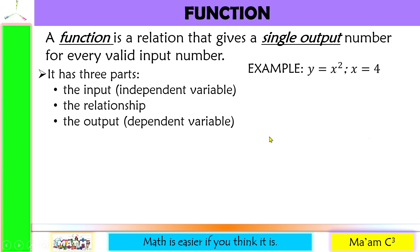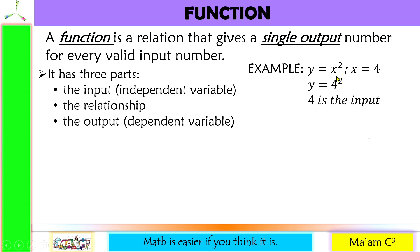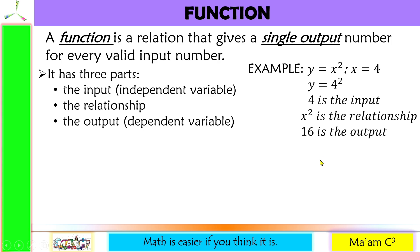For instance, we have y equals x squared, and our x equals 4. When we substitute 4, this becomes y equals 4 squared. The 4 is what we call the input, x squared is the relationship, and 4 squared, which equals 16, is the output.